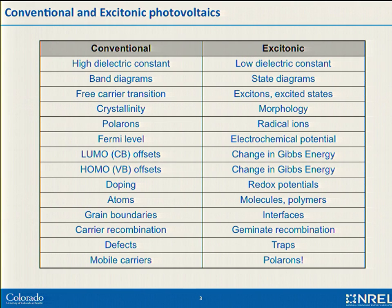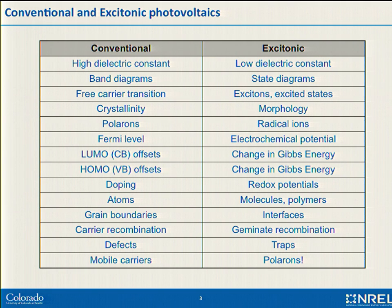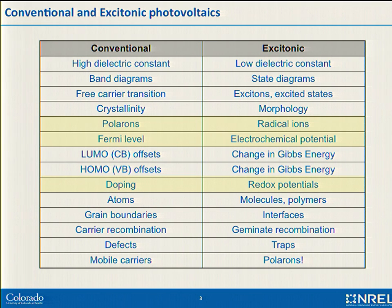Here is a list of some languages and words that come up when we're talking about conventional devices and excitonic devices. Excitonic is a word borrowed from physics, and pure physicists don't actually like us using it. We really shouldn't use the word exciton — mobile excited states is perhaps what we should be referring to. Polarons, radical ions, radical cation, positive polaron — roughly the same thing. Fermi level, electrochemical potential, doping, redox potentials.